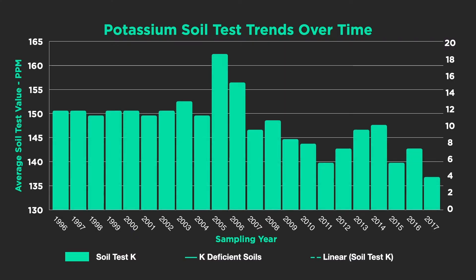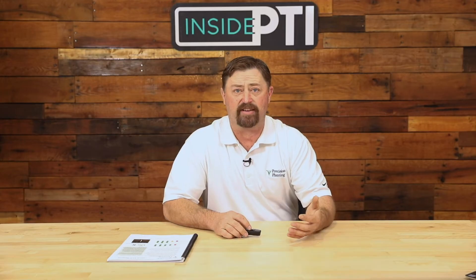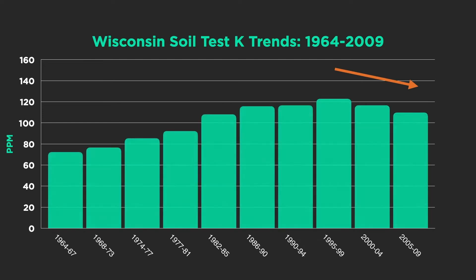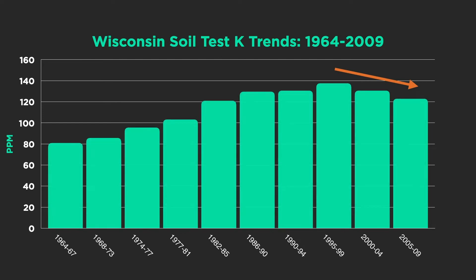Something interesting is happening with potassium, and we've seen this for quite some time now. Data from A&L Great Lakes soil testing labs shows that after 2006, soil samples coming in have had declining potassium levels. The University of Wisconsin at Madison is seeing the same response — starting in the late 90s, soil samples just don't have enough potassium as what we've had in the past. So this is a concern.